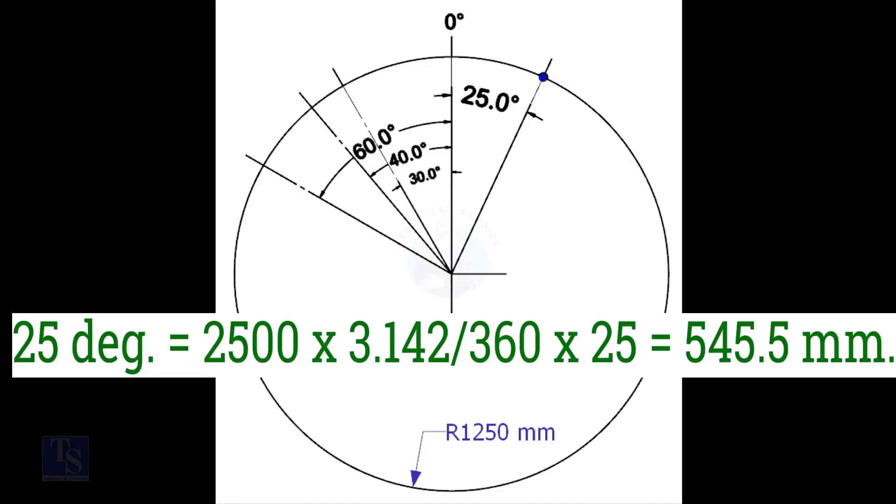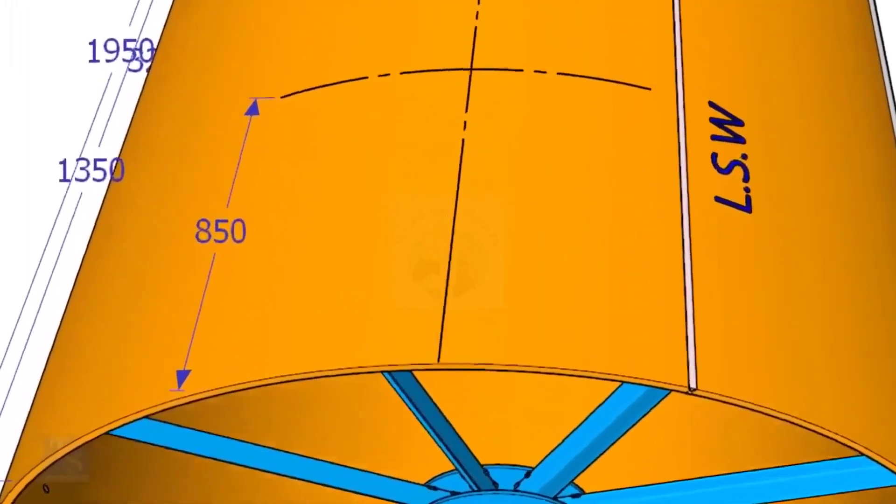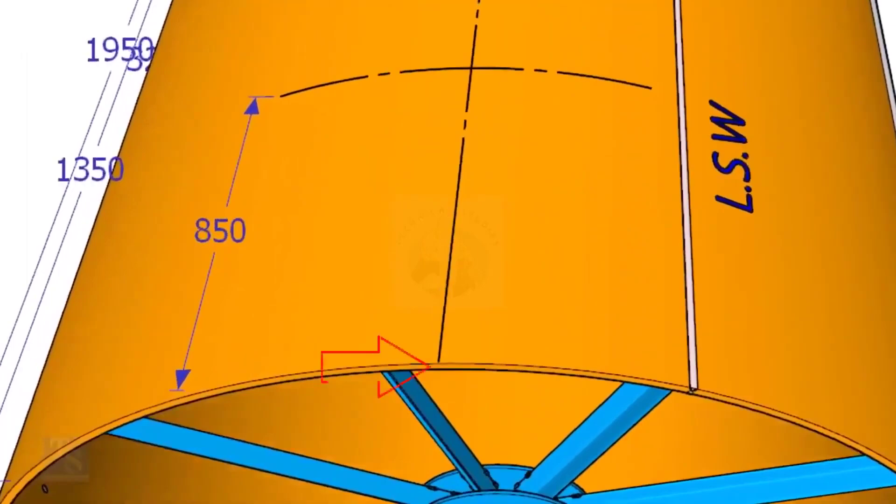Mark this distance on the end of the shell. Mark the same distance roughly 850 millimeters away from the end of the shell and draw a line. Now mark 850 millimeters exactly on this line from the end of the shell as shown.